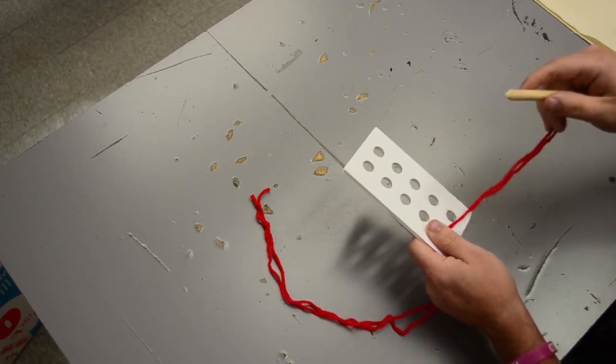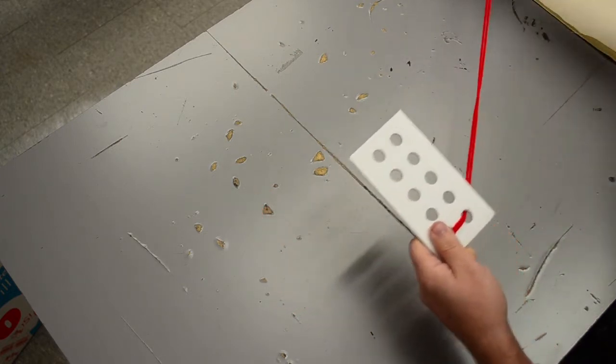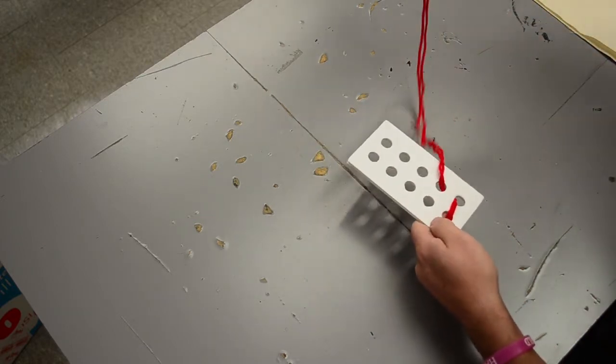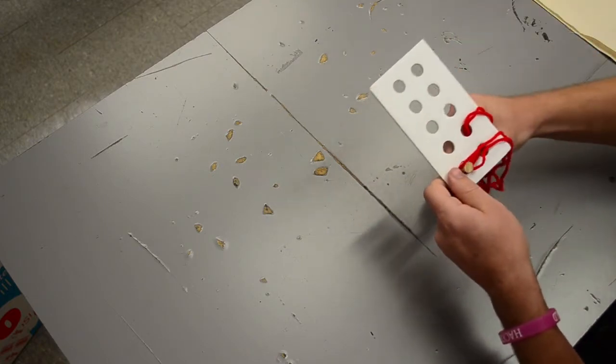The way that the Henson stitch works is you go down and pull through, then you come up, and then you go back through the area that you came down.